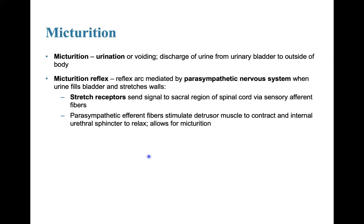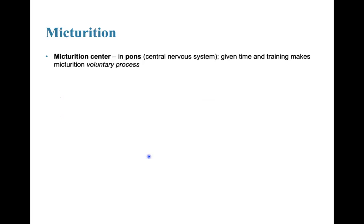Micturition is the process of urination — the discharge of urine from the urinary bladder to the outside of the body. The micturition reflex is a reflex arc mediated by the parasympathetic nervous system. When urine fills the bladder and stretches the walls, stretch receptors send signals to the sacral region of the spinal cord via sensory afferent fibers. Parasympathetic efferent fibers then stimulate the detrusor muscle to contract and the internal urethral sphincter to relax, allowing for urination.